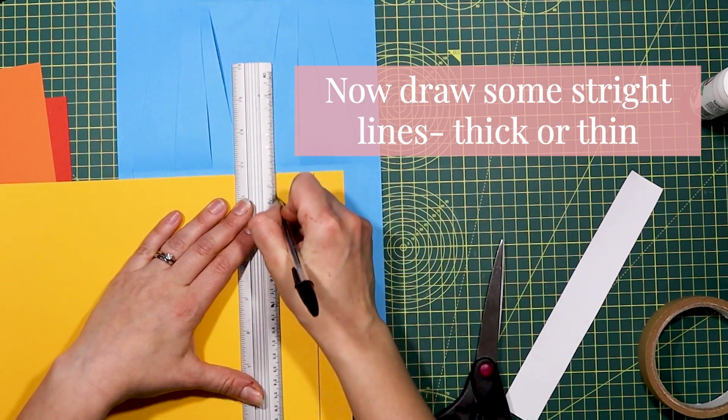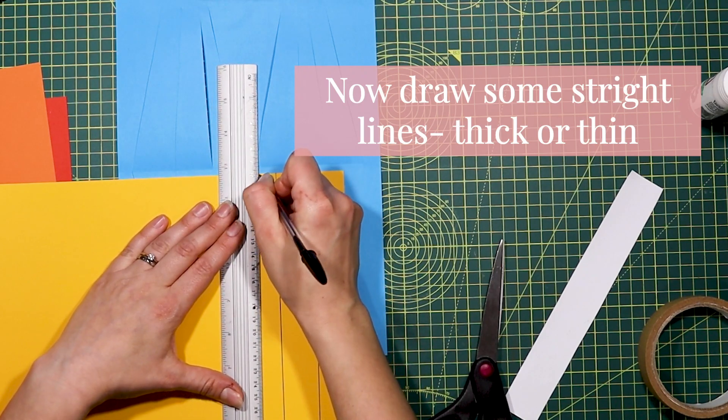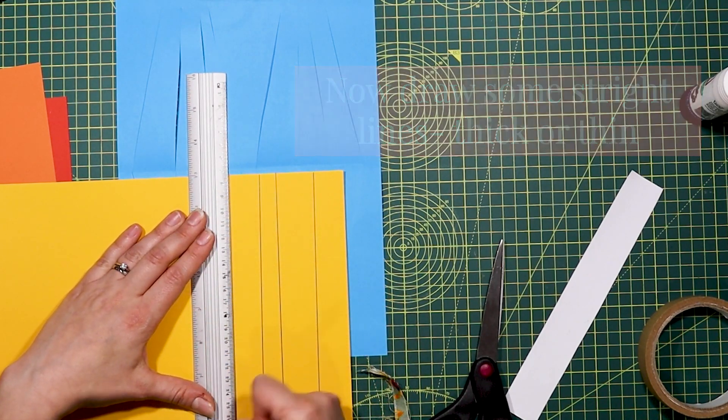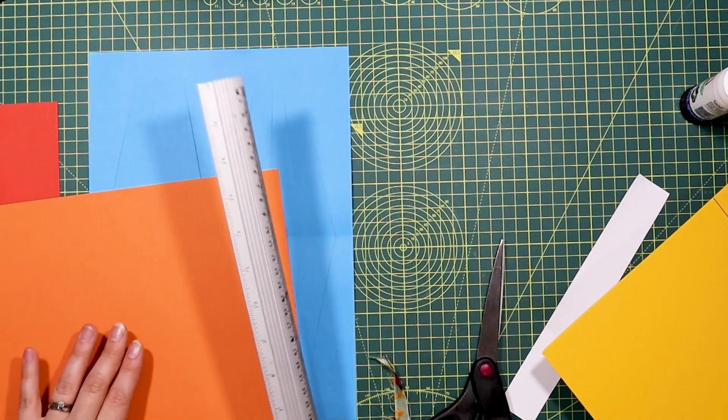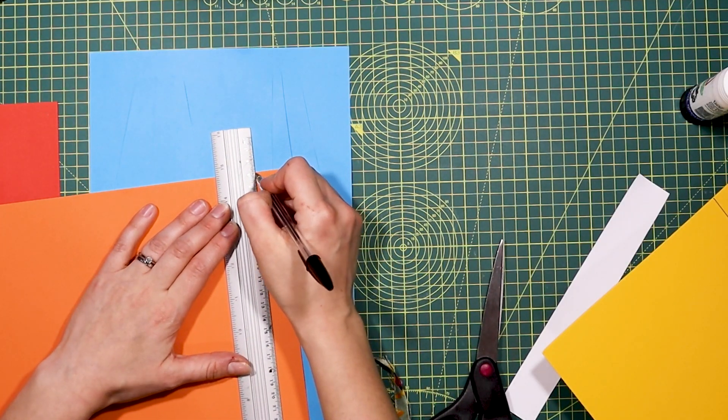Now you're going to make your weft. They're going to be straight lines of other coloured papers. These strips can be thick or thin, using whatever paper you want.